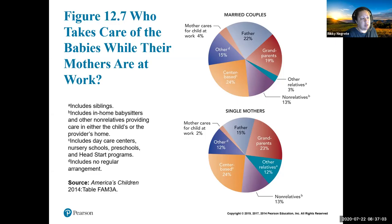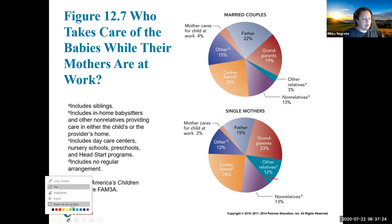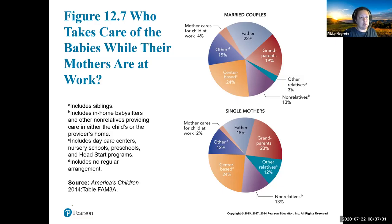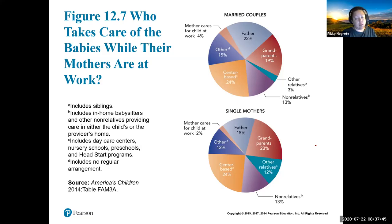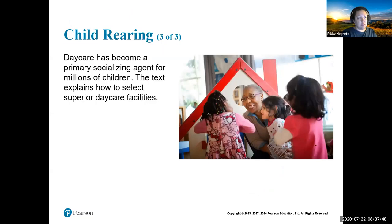For single moms, grandparents and other relatives increase as childcare options because we'd rather have kids go to family members who won't charge. For example, I watch my grandchildren as much as possible so my kids don't have to pay for daycare. Daycare is expensive — a good quality facility costs significantly. Daycare has become the primary socialization agent for millions of children. The textbook explains how to select superior daycare facilities, considering what they teach, safety, sanitation, and the rating.